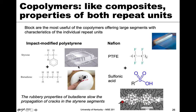A couple of examples: first is impact-modified polystyrene. Polystyrene by itself is something you've probably eaten out of — a cheap plastic container. Butadiene is what they make squishy toys out of. If you combine the rubbery properties of butadiene with the more brittle nature of polystyrene, you get something that slows the propagation of cracks — basically modifying the impact properties.